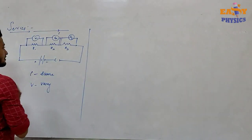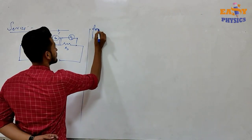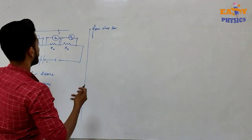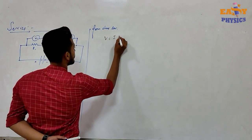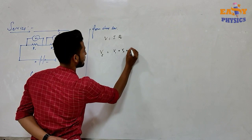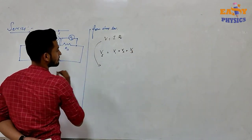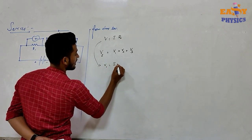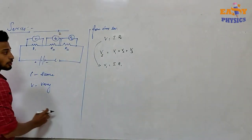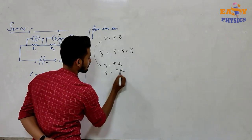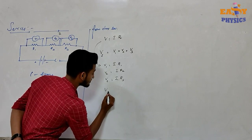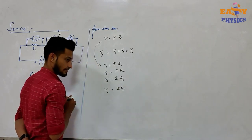If the resistors are connected in a series, from Ohm's law we can write V equal to IR. The total potential difference is V equals V1 plus V2 plus V3. From Ohm's law, V1 equals IR1, V2 equals IR2, and V3 equals IR3. The current I is the same throughout.